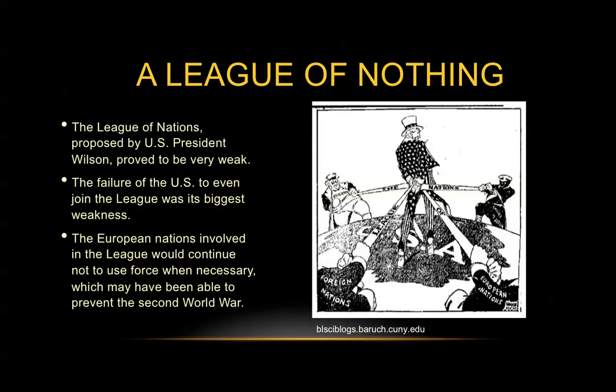Even before the end of World War I, then U.S. President Woodrow Wilson had this grand vision for a League of Nations — a council of countries that would come together and solve problems diplomatically before world-stage wars would take effect. However, the failure of the U.S. government to even back Woodrow Wilson and become a part of the League of Nations created a large weakness for that institution.